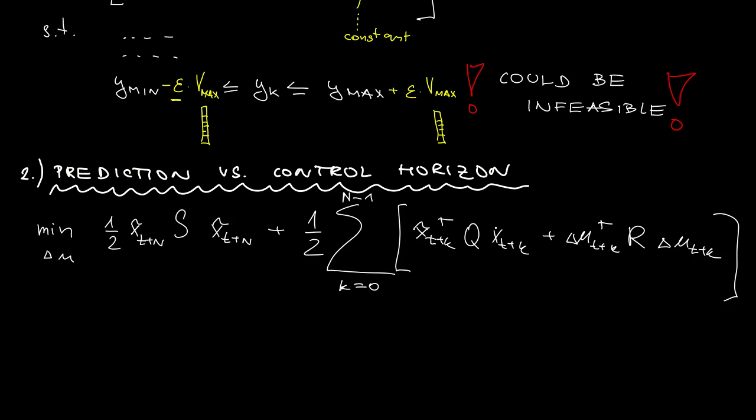And now, besides all other constraints, it seems to be wise to include also the constraint that it's only the first few terms of the control sequence that are non-zero, whereas the other ones starting with N sub U are zero, still to the end of the prediction horizon.